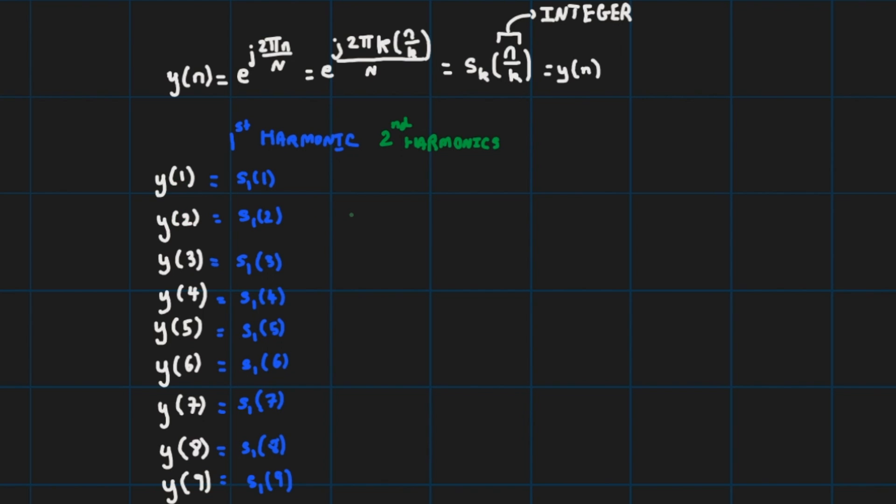3 over 2 not an integer so I'll jump. 4 over 2 is an integer so that's my s₂(2) and so on. So y(6) is my s₂(3), y(8) is my s₂(4).